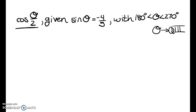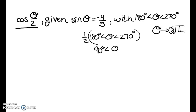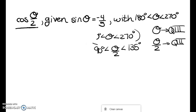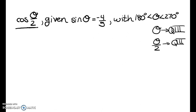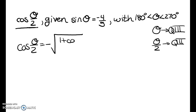Where is theta over 2 going to be? If I take the Q3 inequality — 180 degrees to 270 degrees — and divide everything by 2, I get 90 degrees is less than theta over 2 is less than 135 degrees. So theta over 2 is a Q2 angle. The formula for cosine of theta over 2 uses the plus cosine version, but since cosine is negative in Q2, I choose the negative version.